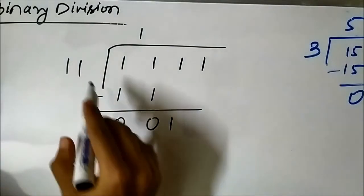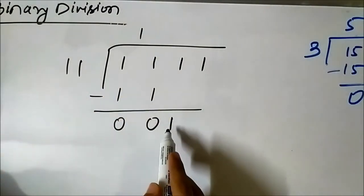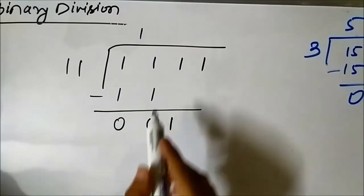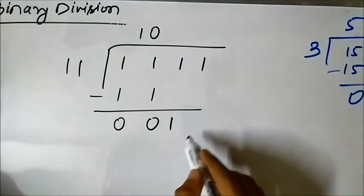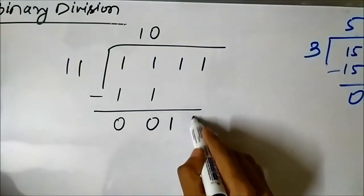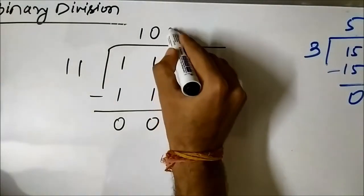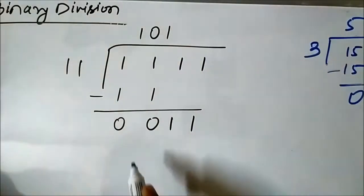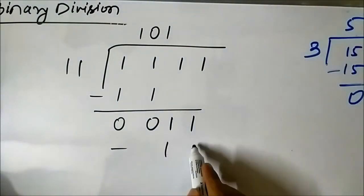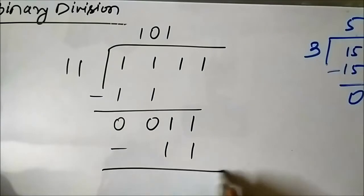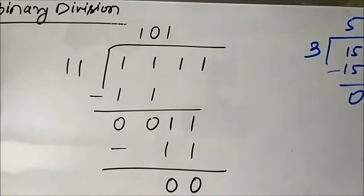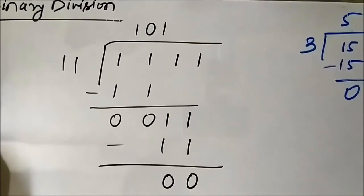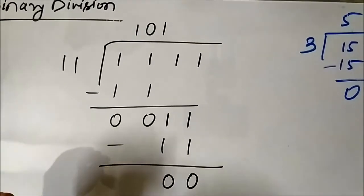Now we cannot divide 1 1 into a single bit — it is less — so we add a 0 in the quotient and bring down the next 1, making it 1 1 again. 1 1 minus 1 1 is 0 0, so the remainder is 0 and we got the same result as in decimal.